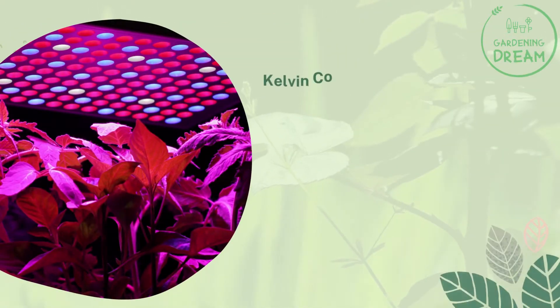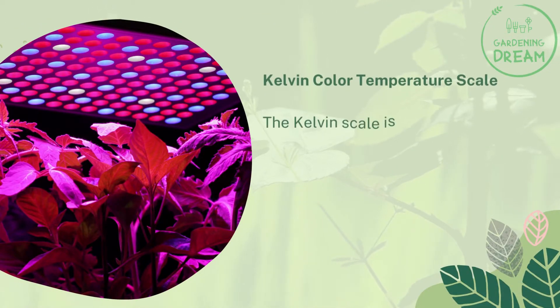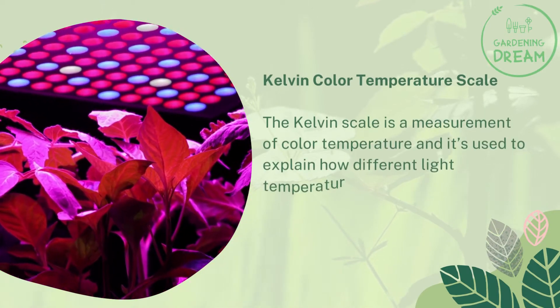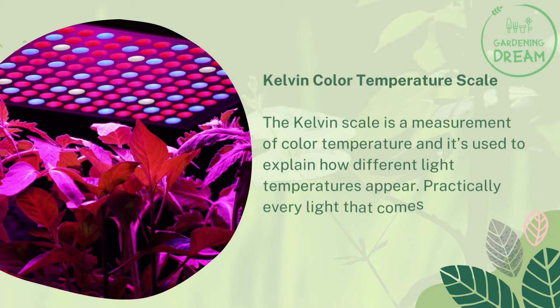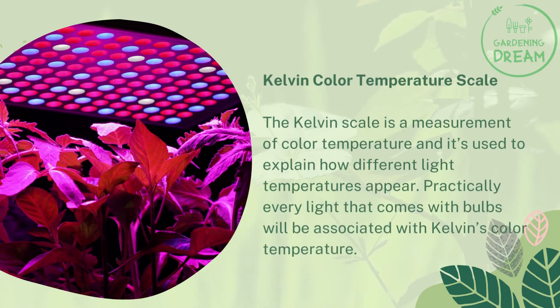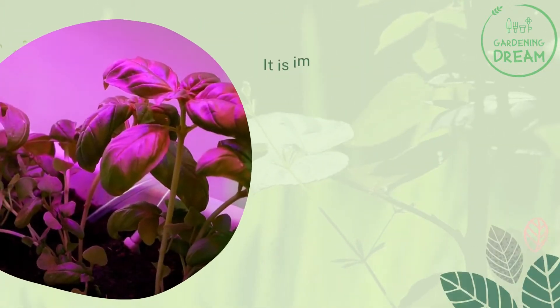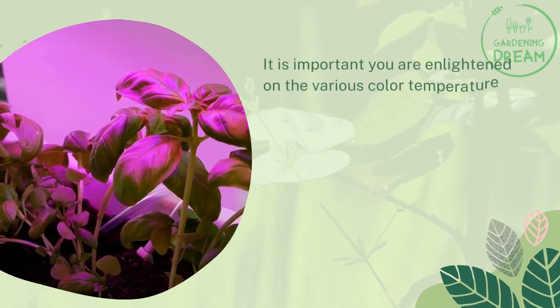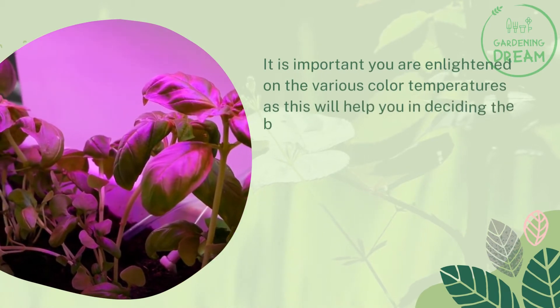The Kelvin scale is a measurement of color temperature used to explain how different light temperatures appear. Practically every light bulb will be associated with a Kelvin color temperature. It is important you are informed on the various color temperatures, as this will help you in deciding the best lighting for your plants' needs.